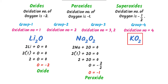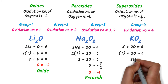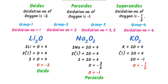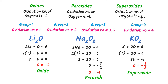Thirdly, in this compound there is 1 atom of potassium and 2 atoms of oxygen. I write: potassium + 2(oxygen) = 0. The oxidation state of potassium is +1, so 1 + 2(oxygen) = 0, giving 2(oxygen) = −1, or oxygen = −1/2. The oxidation state of oxygen is −1/2, thus it is superoxide. Using this trick, we can easily find oxides, peroxides and superoxides.